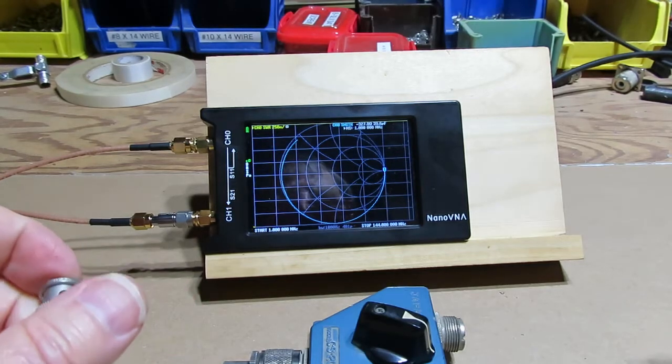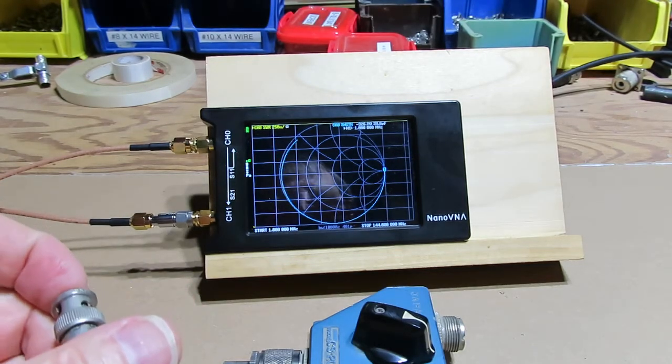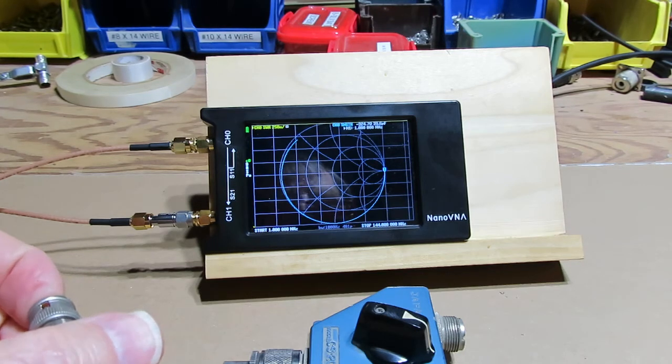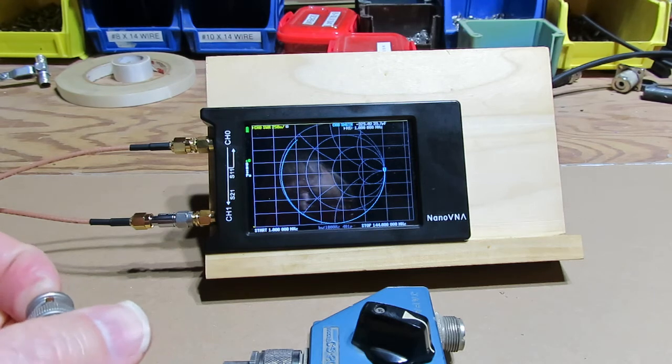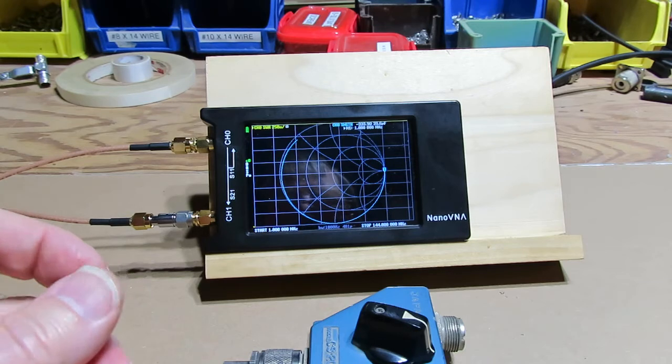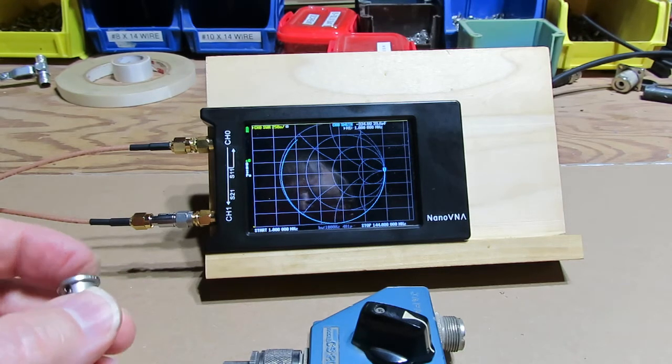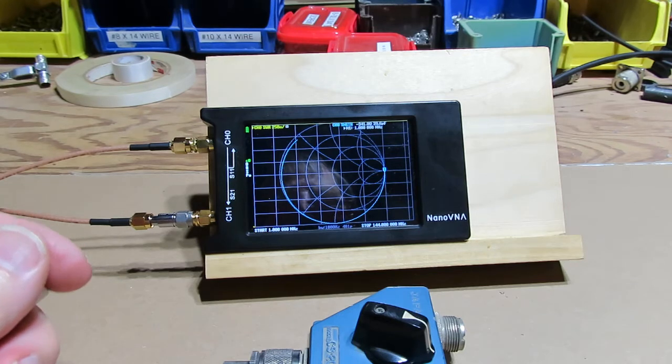Hello, this is Barry, KU3X. The other day I made a video showing you how to use the Nano VNA to check balance, and you're looking for how much attenuation it offers. You can also check for inline losses and attenuation in dB. I also mentioned antenna switches, so today we're going to check an antenna switch.